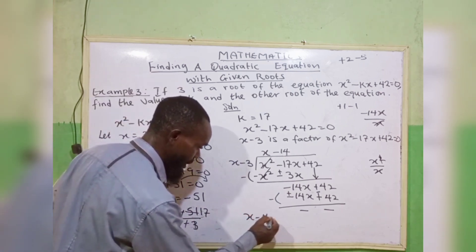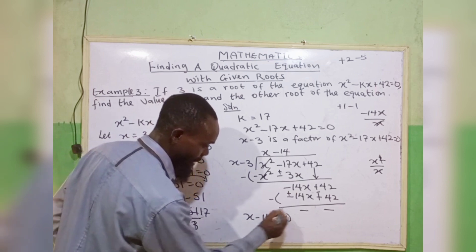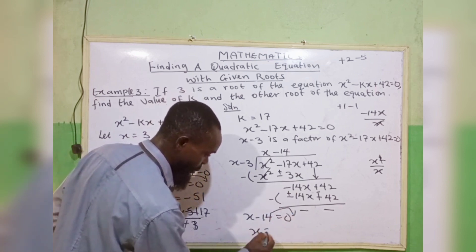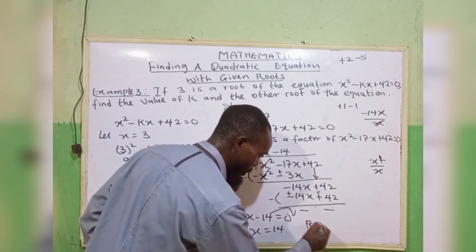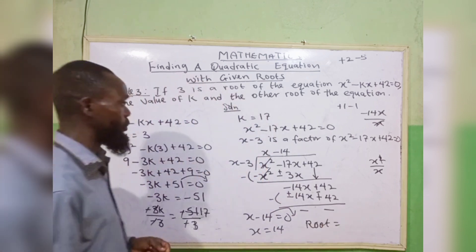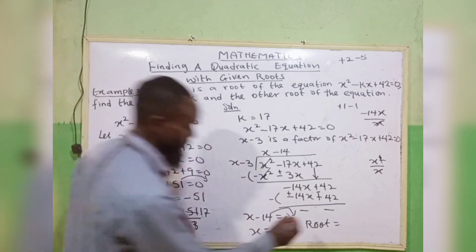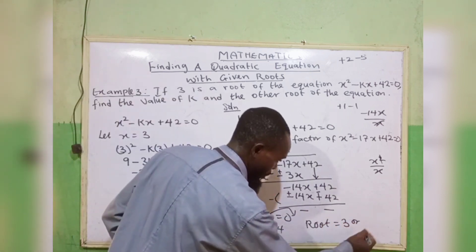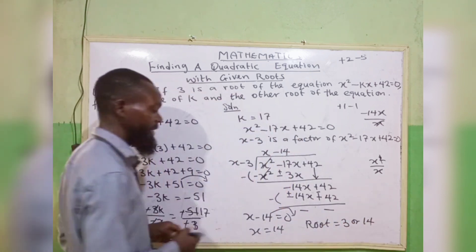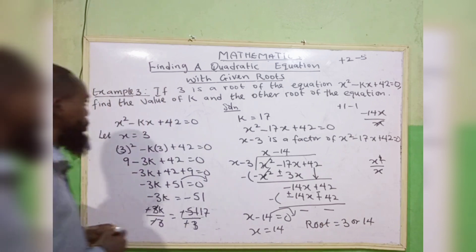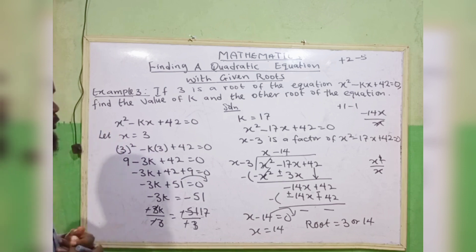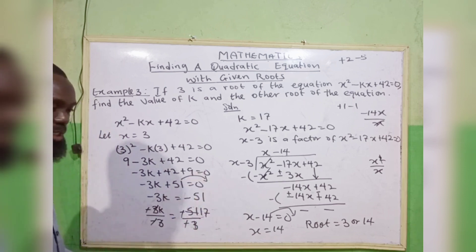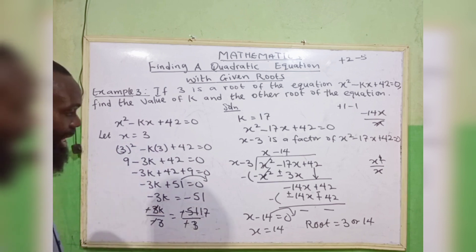The other factor is x minus 14. Setting x minus 14 equals 0 gives x equals 14. So the roots of the equation are 3 and 14. To summarize: use the given root to find the equation, then use long division to find the other root.